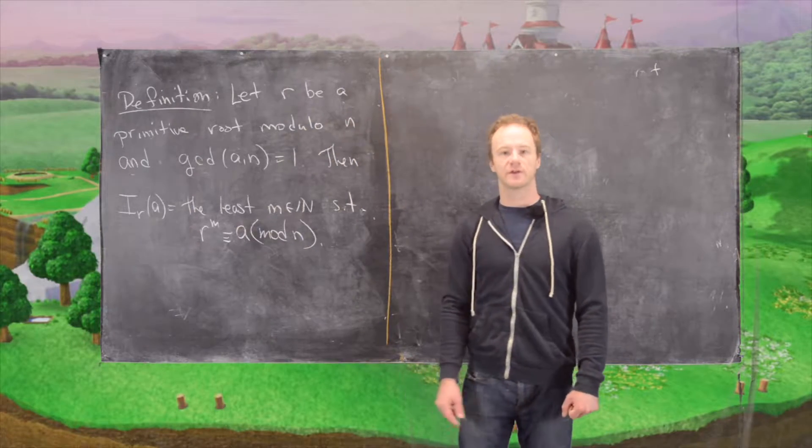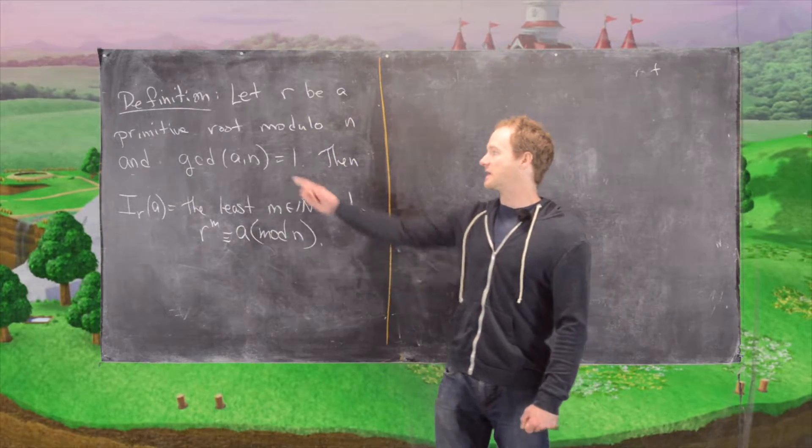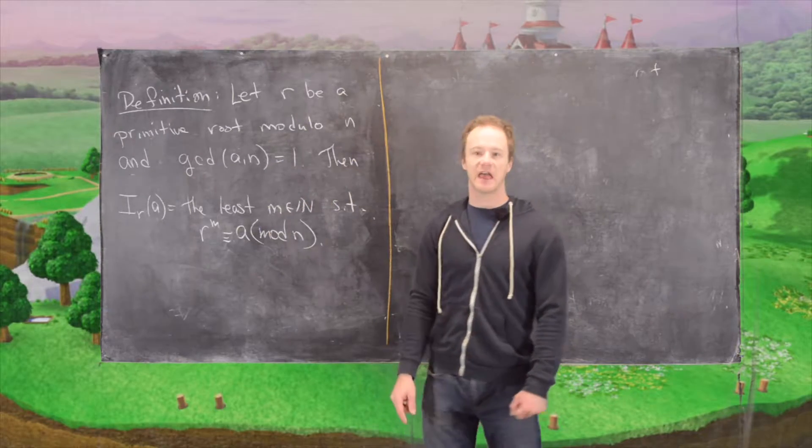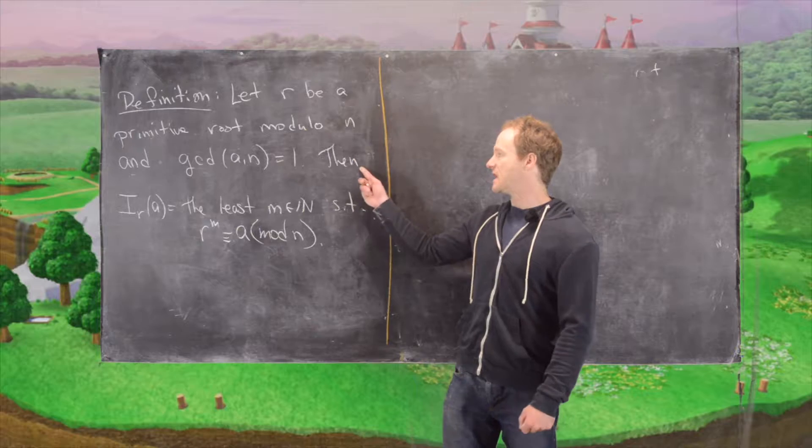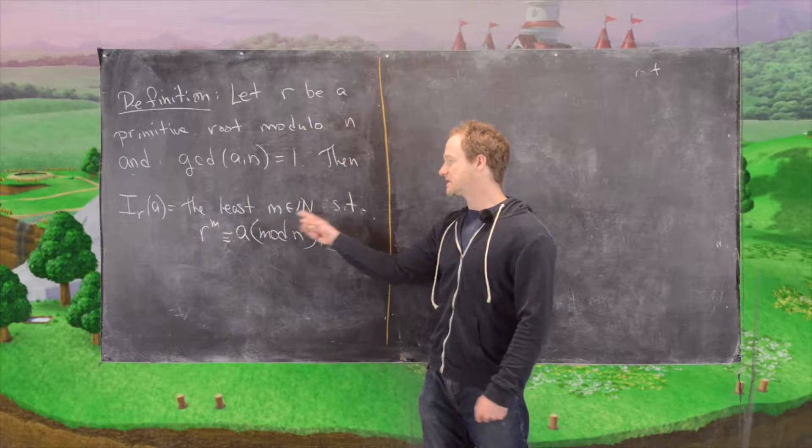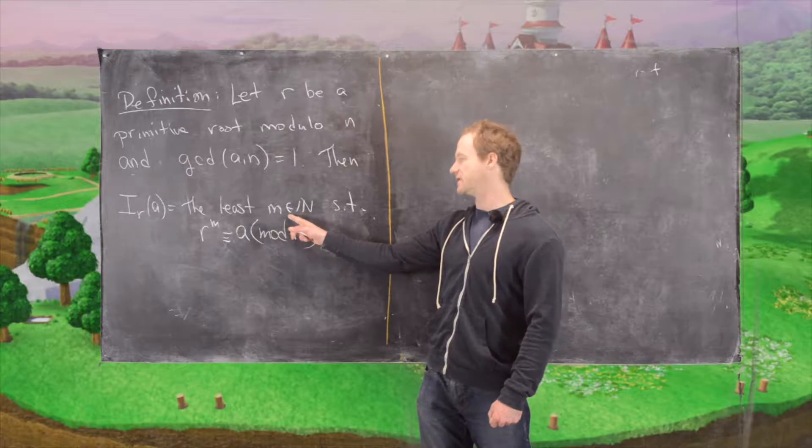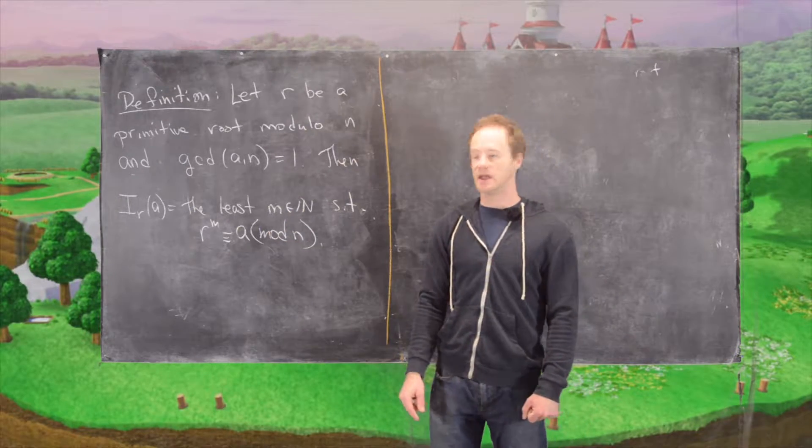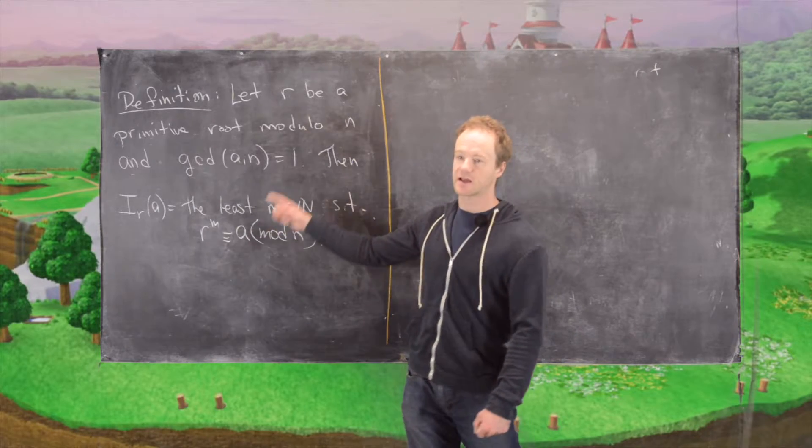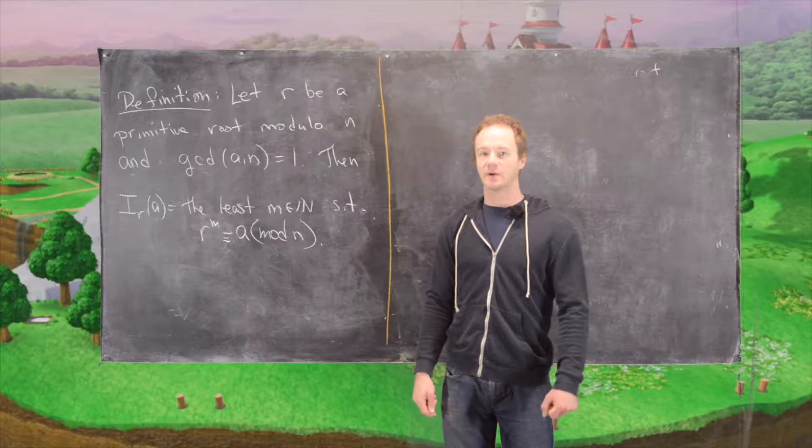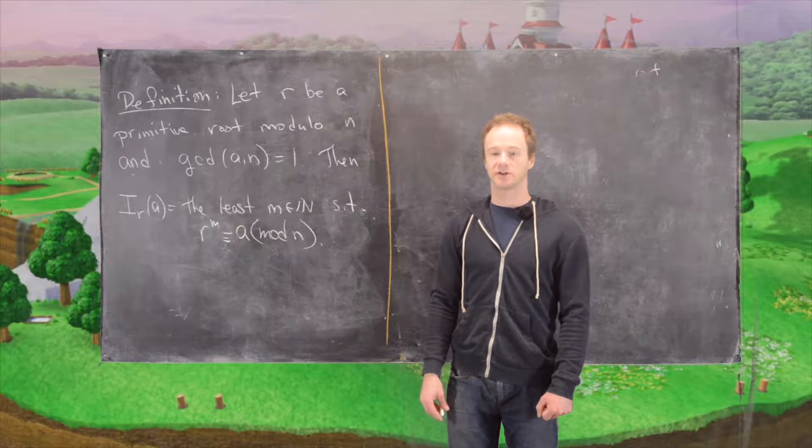So we let r be a primitive root modulo n and let's pick another integer a such that the GCD of a and n is one. Then we define this thing i sub r a to be the least natural number, so positive integer, such that r to the m is congruent to a mod n. So notice this looks like a logarithm exponential type of definition and that's exactly what it is except we're just working in modular arithmetic.